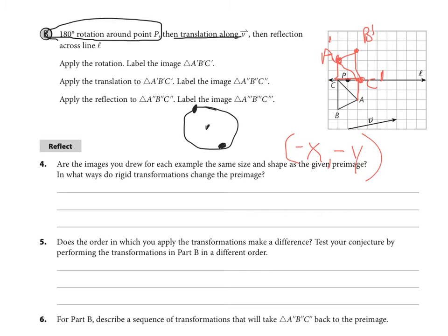Now we're going to translate it. So translation means that every point does what the vector says to do. And this vector says one, two, three, four, five to the right and one up. So every point is moving five right and one up. So B goes one, two, three, four, five right and one up. A goes one, two, three, four, five and one up. And C goes one, two, three, four, five and one up.